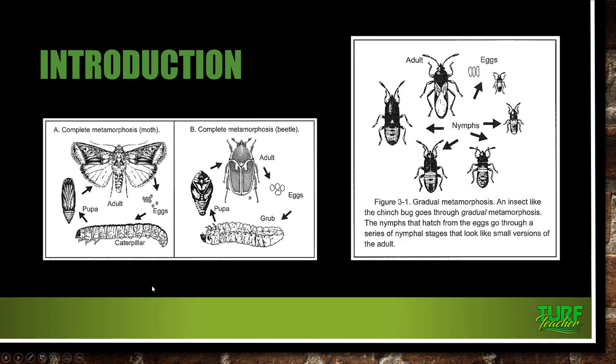With gradual metamorphosis, the babies are called nymphs, and in complete metamorphosis, they are called pupae. A good way to remember that: looks like mom and dad versus doesn't look like mom and dad when it comes to their developmental stages.